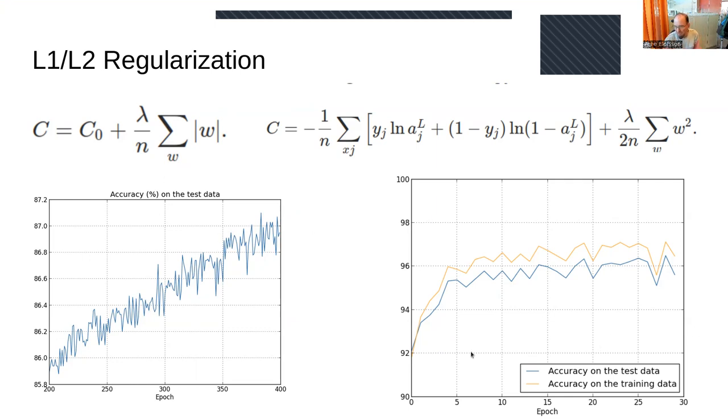This helps - in the previous example, test and training accuracy follow each other more closely. They improve fast after 5-10 epochs and keep improving all the way over 400 epochs.